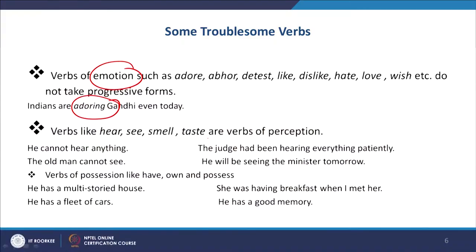The old man cannot see — here 'see' refers to sight. But when you use 'see' with a progressive it takes a different meaning. For example: 'He is seeing the minister tomorrow' or 'I am seeing the professor tomorrow' — so that actually means you are going to visit or meet him.